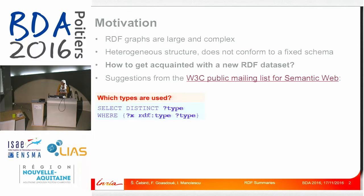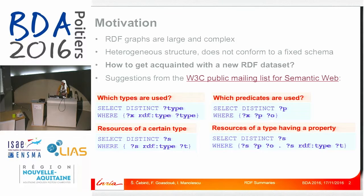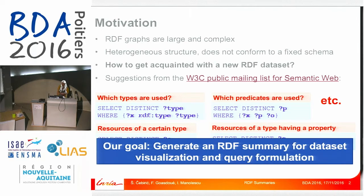Some usual suggestions are to run a series of manually written queries to get some idea of what is inside, such as writing a query to retrieve distinct types, distinct properties, resources of a certain type, or resources of a type having a property, and so on. But this is all very ad hoc and random. Our goal is to generate an RDF summary from the data such that when a user looks at it, they can immediately get an insight into the structure of the dataset, know what kind of queries they can ask, and get some answers. So it assists them in dataset visualization and query formulation tasks.